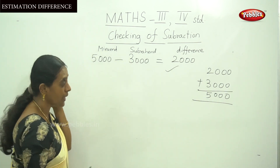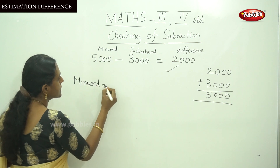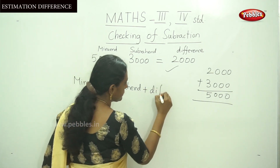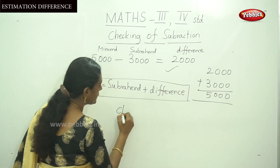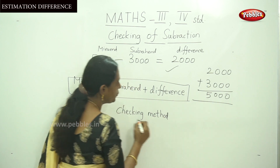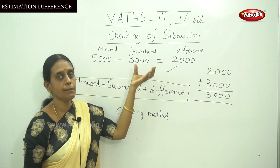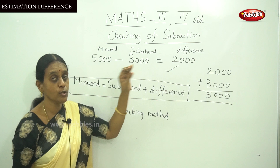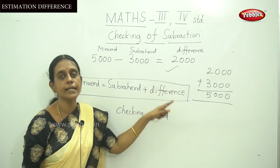By checking of subtraction, you can add the difference and the subtrahend. Our formula is: minuend equals subtrahend plus difference. To prove your subtraction sum is right or wrong, simply add the difference with the subtrahend. If you get the correct minuend, your calculation is correct. If you can't get the minuend, you made some mistake in the calculation.